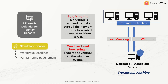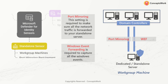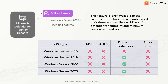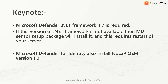If you don't want to whitelist URLs on your domain controllers, you need a dedicated standalone server. The third scenario is the built-in sensor, which is currently only applicable to domain controllers with a minimum version of Windows Server 2019. This feature is only available to customers who have already onboarded their domain controllers to Microsoft Defender for Endpoint.